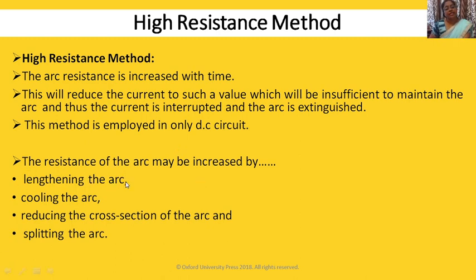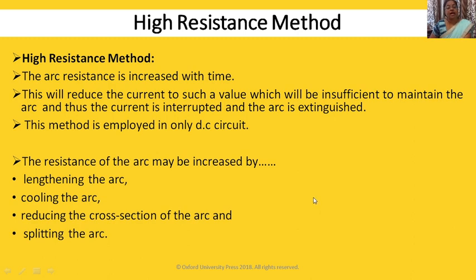What is lengthening the arc? As you know, R = ρL/A, which means resistance is directly proportional to length. In the high resistance interruption method, we have to increase the arc resistance so that the current flowing through it reduces to a minimum value. This is done by lengthening the arc — if you increase the length of that arc, resistance will increase and the arc gets extinguished.